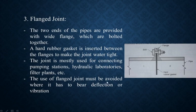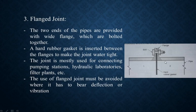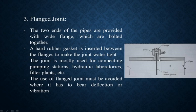The use of flanged joint must be avoided where the pipe has to bear deflection or vibration. These joints cannot be used where the pipeline vibrates — such as near machinery in a hydraulic laboratory or filter plant. Vibrations and deflections can disturb the joint, cause damage, water leakage, or destroy it completely, so we do not place this joint where the pipeline needs to bear vibration or deflection.